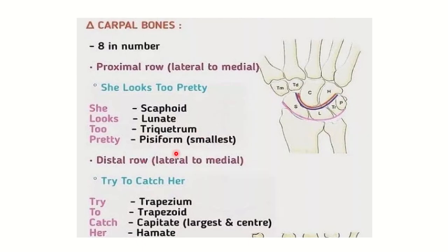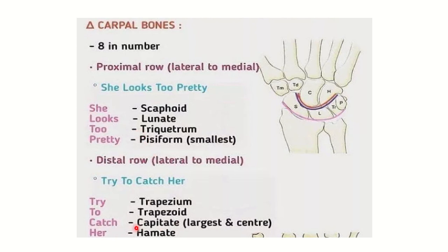There is a mnemonic here: 'She Looks Too Pretty, Try To Catch Her.' The carpal bones are eight in number, divided into two rows — proximal and distal, each containing four bones. S for scaphoid, L for lunate, T for triquetral, P for pisiform — then trapezium, trapezoid, C for capitate, and H for hamate.